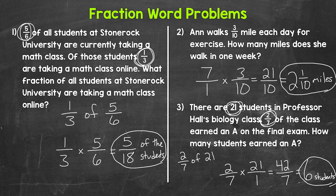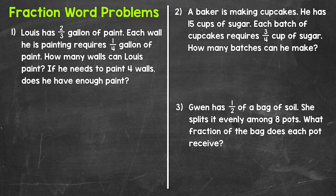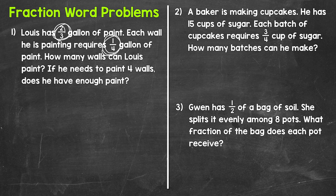So there are the multiplication examples. Let's move on to division. Let's jump into number one: Lewis has two-thirds of a gallon of paint. Each wall he is painting requires one-fourth of a gallon of paint. How many walls can Lewis paint, and if he needs to paint four walls, does he have enough paint? We need to do two-thirds divided by one-fourth.